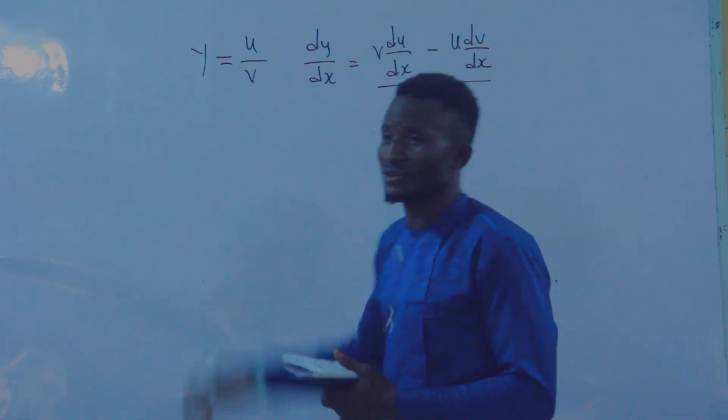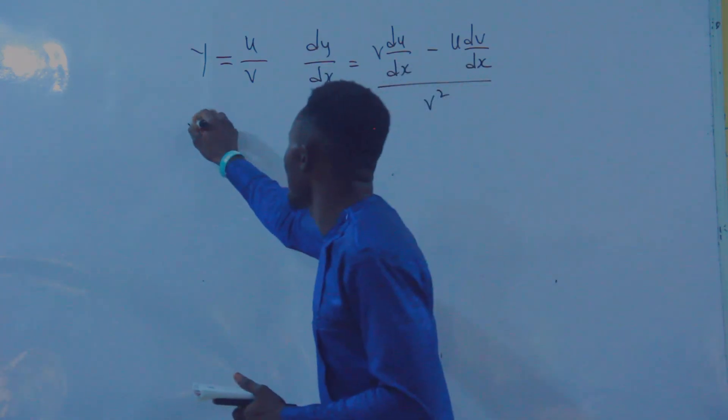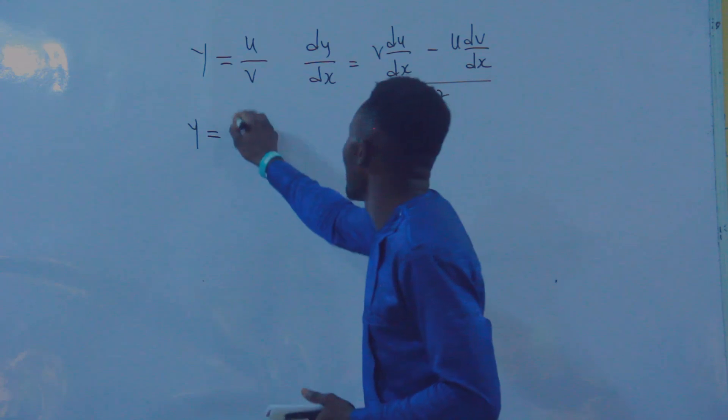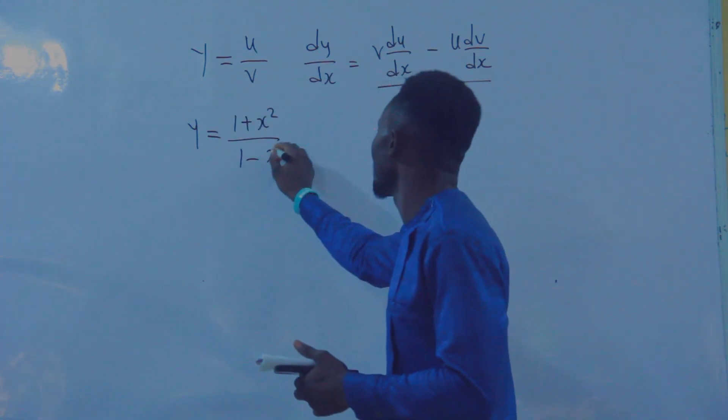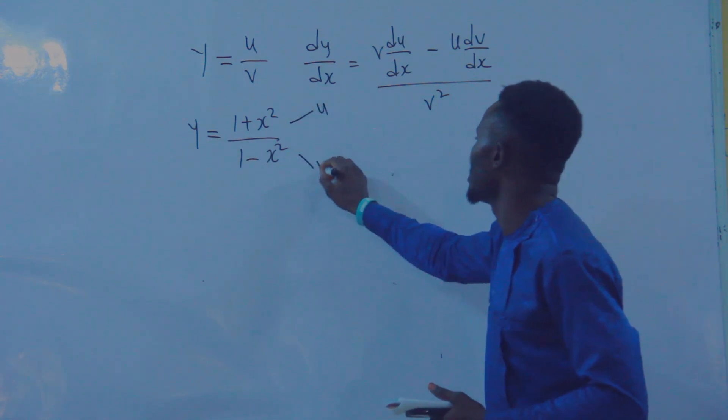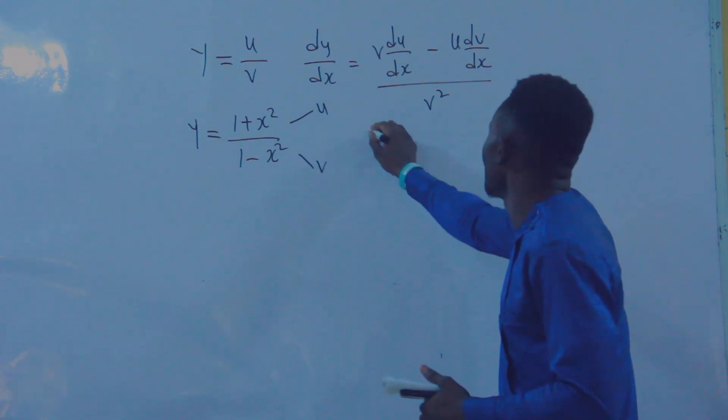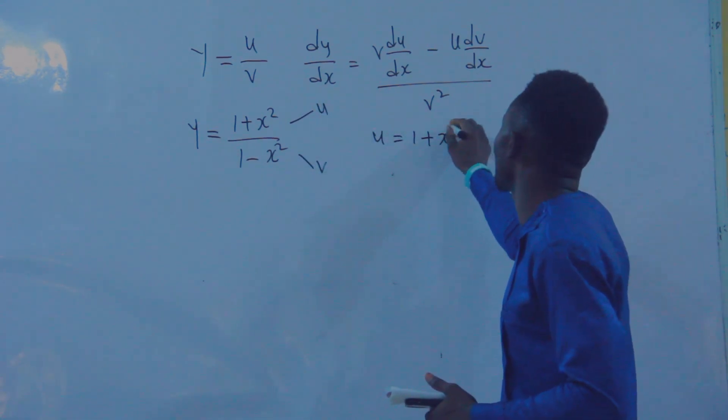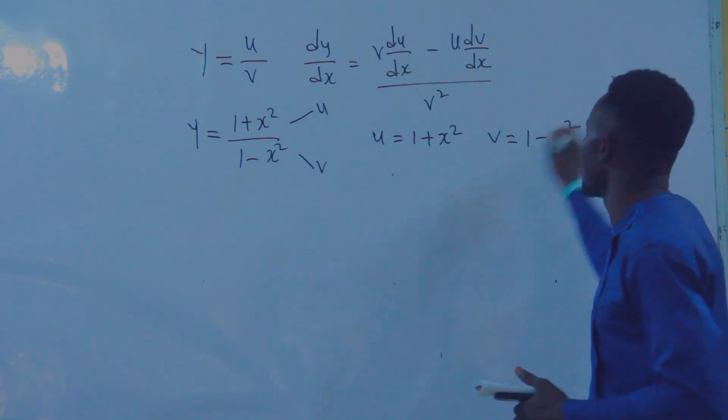Now, where is your u? Let me give you the question. If you have y equal to one plus x squared over one minus x squared, you make your numerator u and denominator v. So u equals one plus x squared, and v equals one minus x squared.